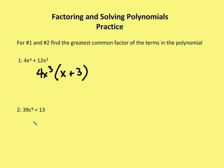And number two, I'm going to factor out just the 13. So I have 3c to the ninth plus 1. So pretty straightforward, the first two.